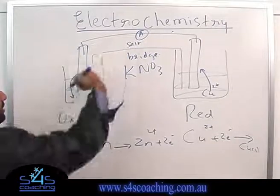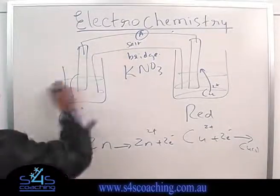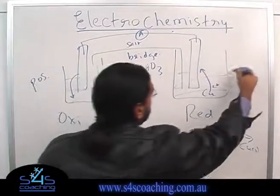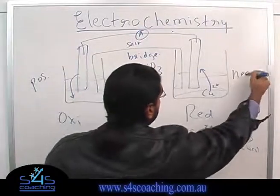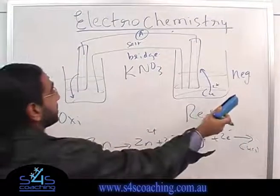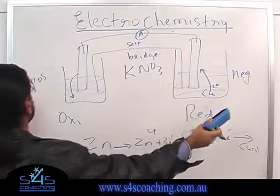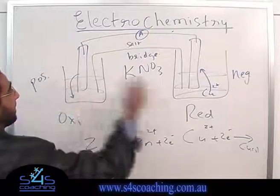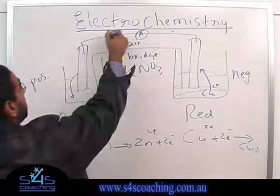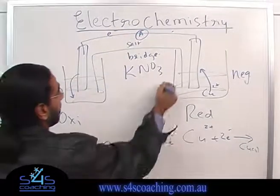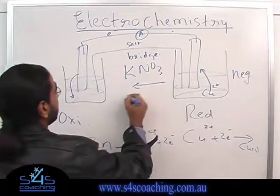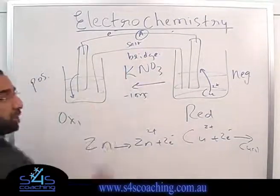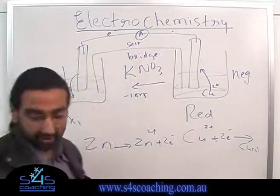This side is giving away electrons, so it is becoming more positive. The other side is taking the electrons, so it is becoming more negative. To make sure that both solutions remain neutral, I need the negative charge to come back. So the electrons are going one way, and I need the negative ions to flow back through the salt bridge to complete the circuit.